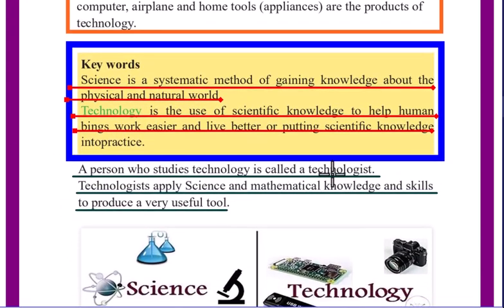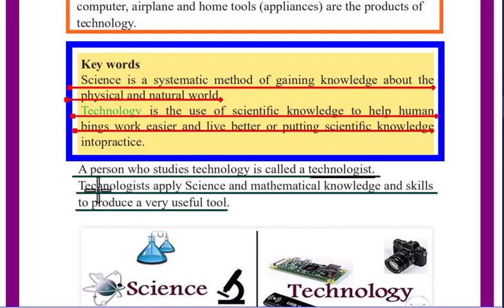A person who studies technology is called a technologist. A person who studies biology is called a biologist. A person who studies physics is a physicist. A person who studies chemistry is called a chemist. Technologists apply science and mathematical knowledge and skills to produce useful tools.